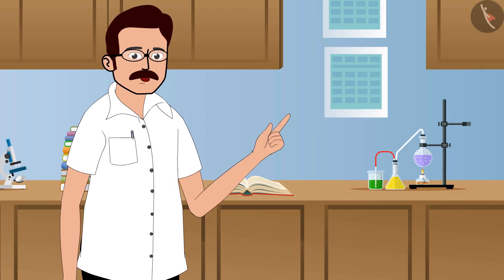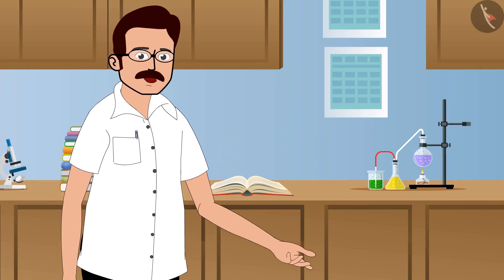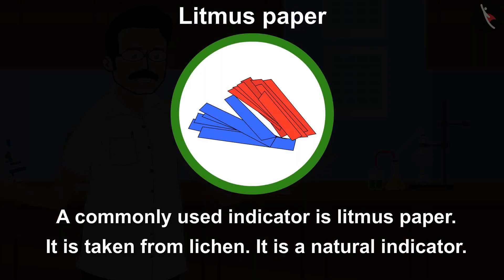Hmm, good observation. Children, a commonly used indicator is litmus paper. It is taken from lichen. It is a natural indicator.